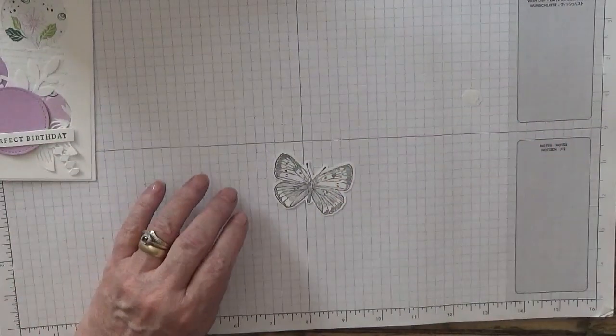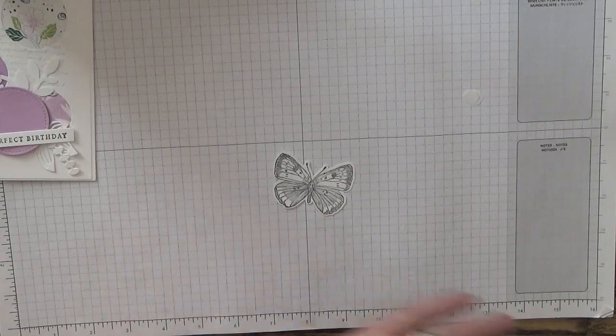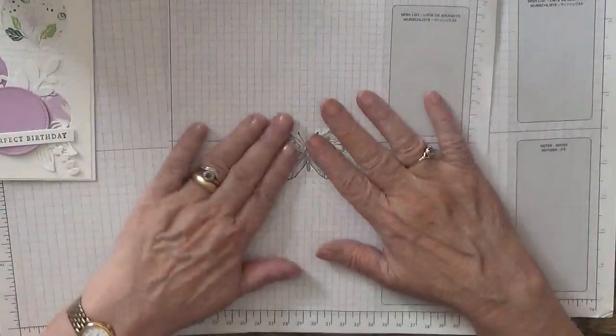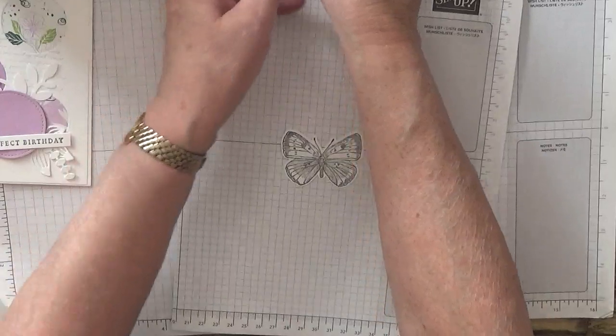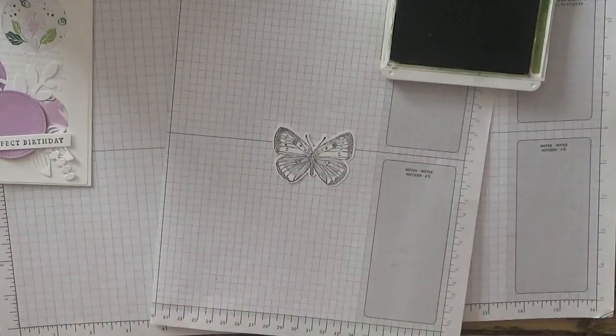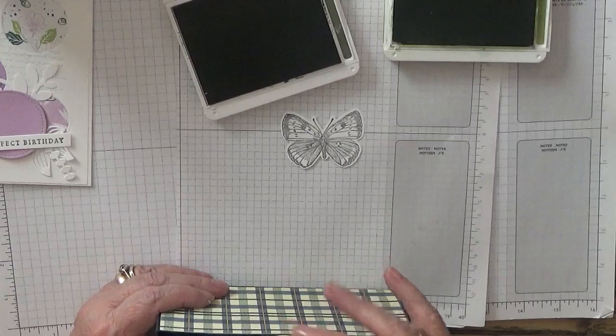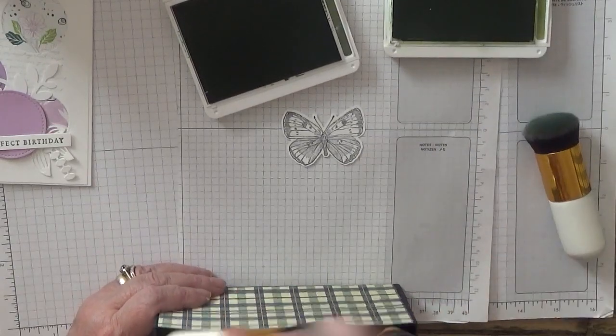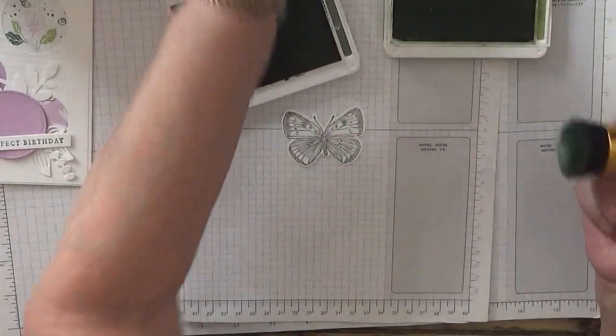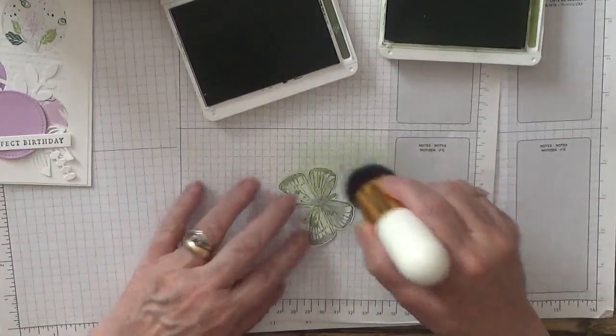All we've got to do is color this butterfly in. What I'm going to do with this is with Old Olive and Mossy Meadow. Then get a brush. Is that my green? Or is that my green? Can't tell which one's which. With Old Olive, I'm just going to color it all in like that.